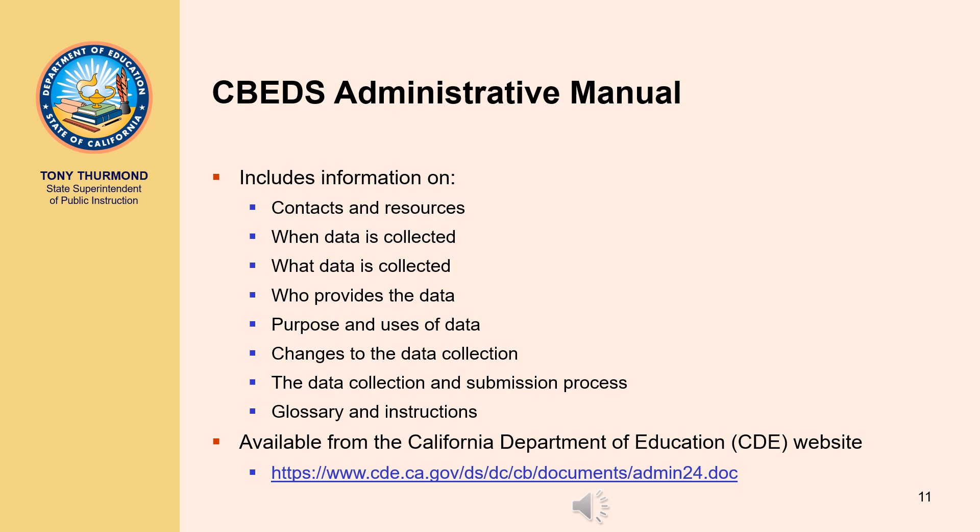The CBEDS Administrative Manual is an instruction booklet that includes information on contacts and resources, when data are collected, what data are collected, who provides the data, purpose and use of data, changes to the data collection, the data collection and submission process, the glossary, and instructions. The administrative manual is available from the CBEDS webpage.